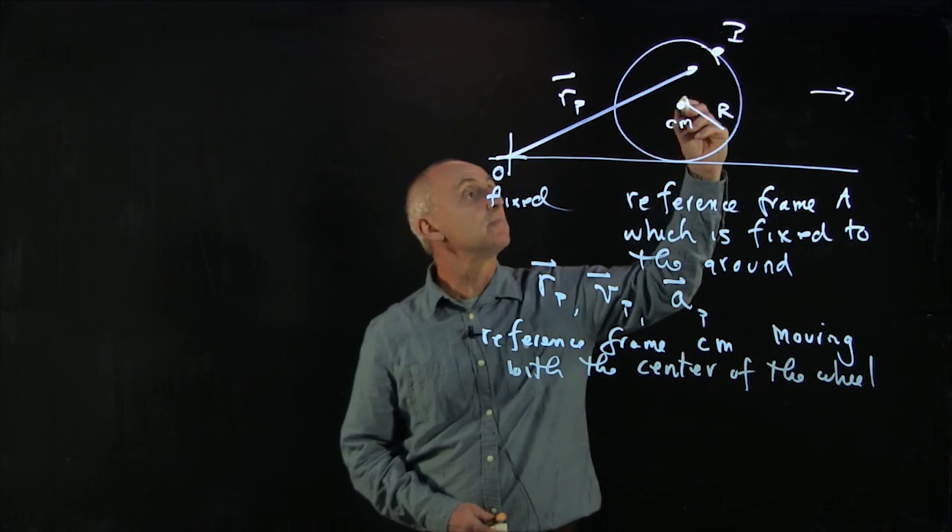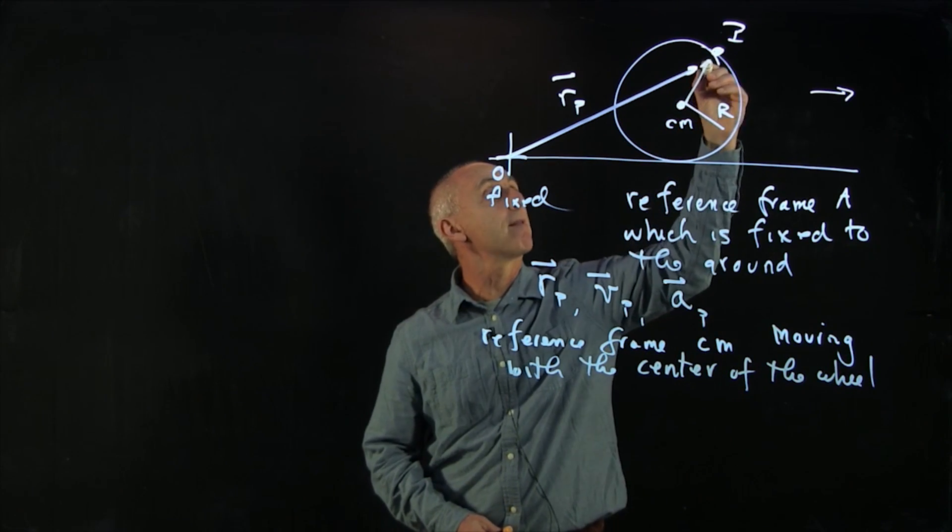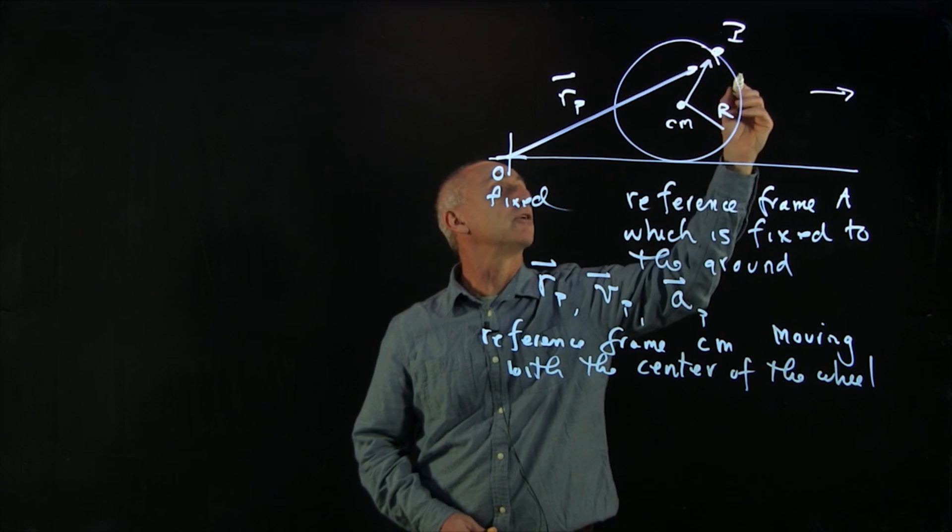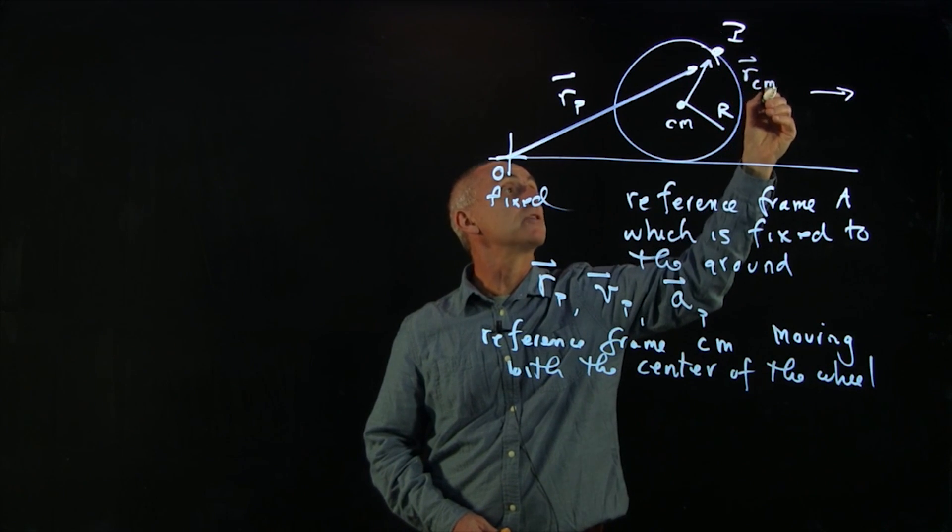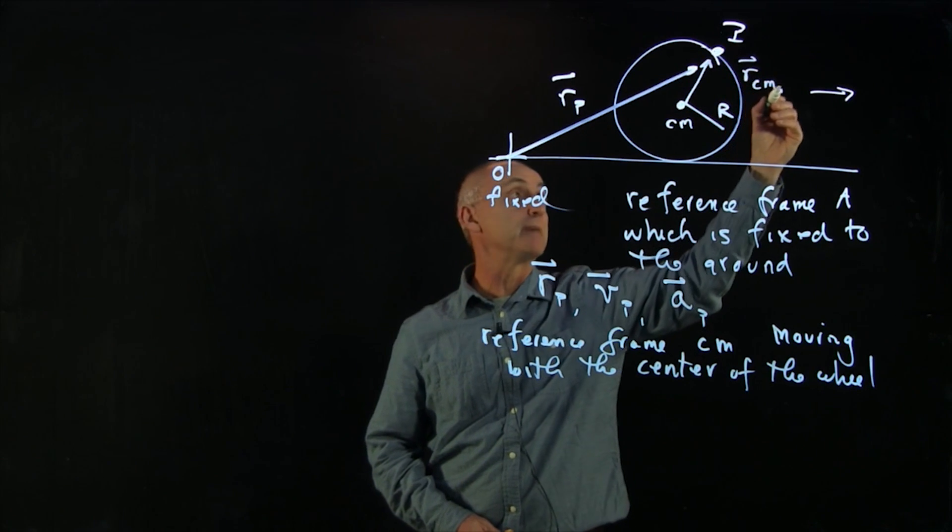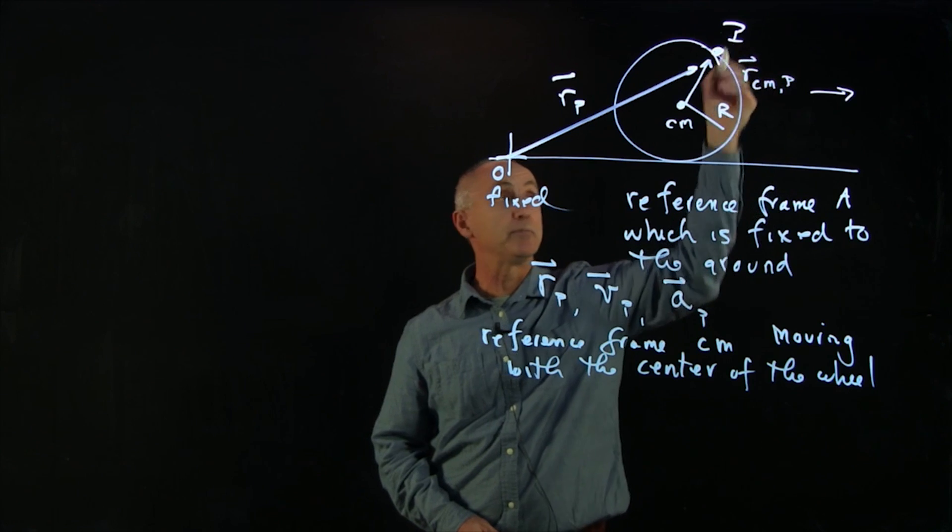So in that reference frame, we'll denote this point by vector r_Cm, because we're in the reference frame with respect to the center of mass, and we're talking about the point P.